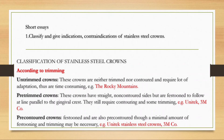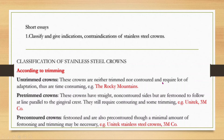Next we have a very important topic in pediatric dentistry — stainless steel crowns. First, the classification regarding trimming: untrimmed crowns are neither trimmed nor contoured and require a lot of adaptation, like Rocky Mountain crowns. Pre-trimmed crowns have straight non-contoured sides.